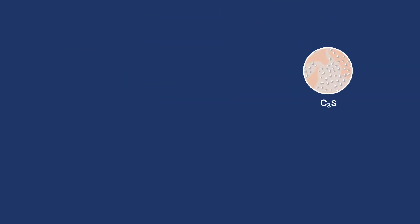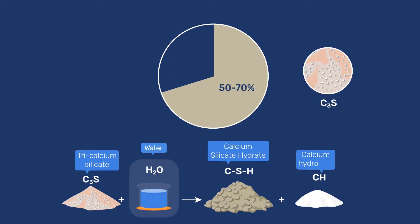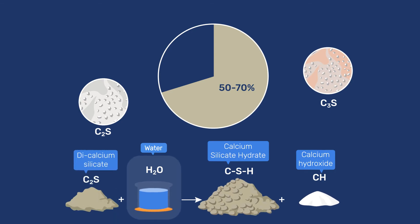C3S represents 50 to 70% of Portland cement and is responsible for most strength and durability. Its reaction with water produces both CSH and CH. The same two phases are produced by the hydration of C2S, but at a much slower rate and in different proportions. This, together with an abundance of only 20%, means that C2S is only of secondary importance in Portland cement.